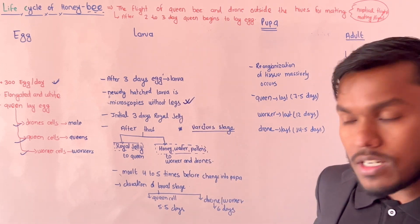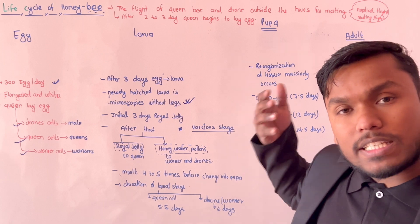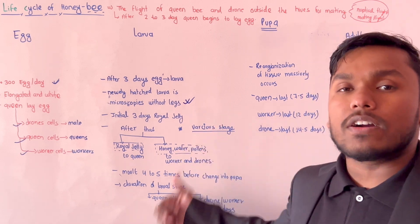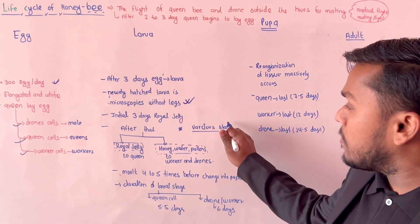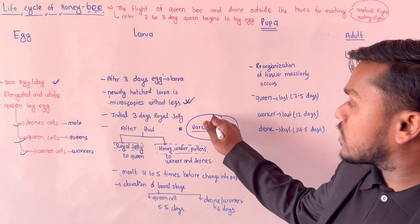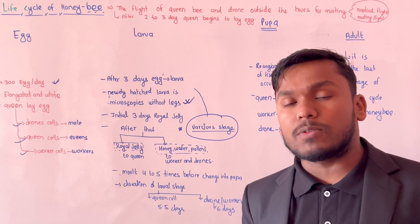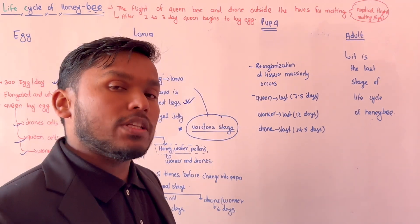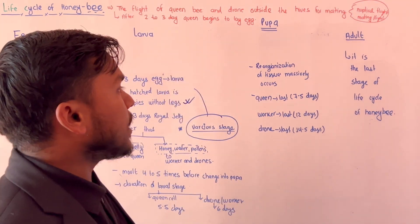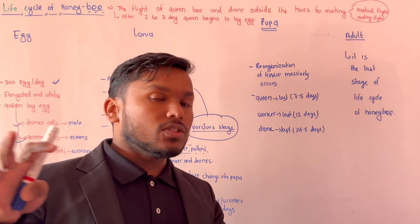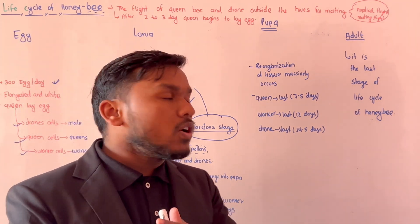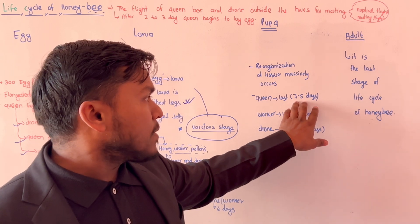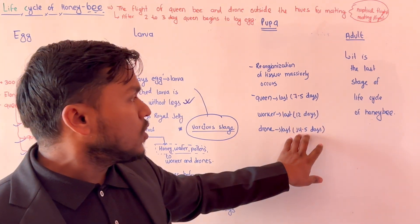The development is completed in six days. The worker stage takes 30 days to reorganize. The queen will complete the work in 7 days, then the worker will take 12 days and the drone will take 14 days to complete their development.